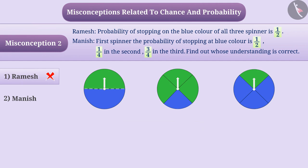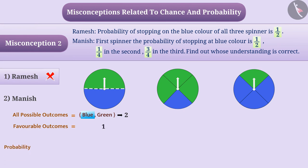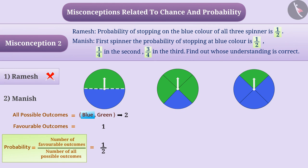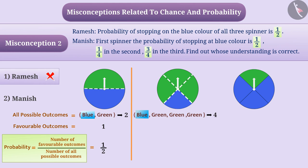The first spinner has 2 equal parts, so all possible outcomes will be blue and green. The number of all possible outcomes is 2, but the condition of getting blue color is only 1, so the number of favorable outcomes is 1. The probability of getting the favorable outcome, blue color, is equal to the number of favorable outcomes divided by the number of all possible outcomes, which is 1 by 2. On doing 4 equal parts of the second spinner, there are 3 green parts and 1 blue part. The number of possible outcomes is 4, and the condition of getting blue color is only 1. Therefore, the number of favorable outcomes is 1, and the probability of getting blue color is 1 by 4.